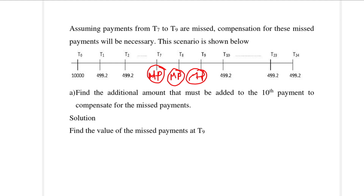The first thing we want to do is define the value of the missed payments at time T9. We can consider this as an annuity, and remember an annuity always starts one time period before the first payment. So if we take T6 as the start, then from T6 to T9 can be considered an annuity, and we would like to know the value of the missed payments at time T9. We can get the future value of an annuity.